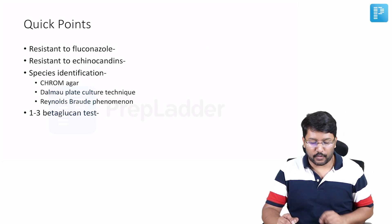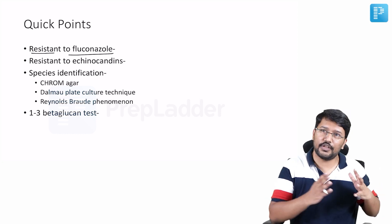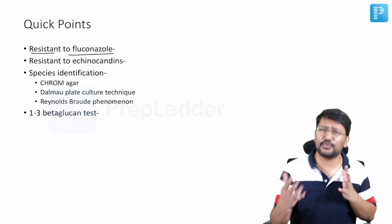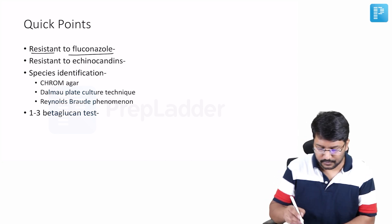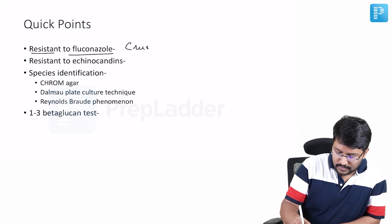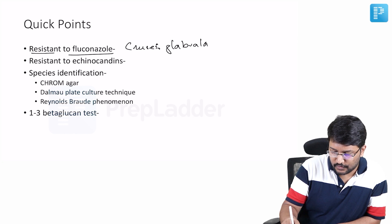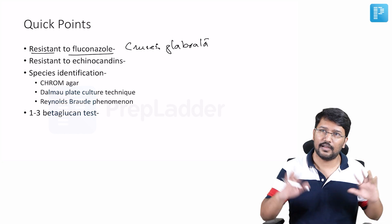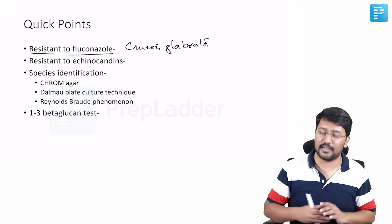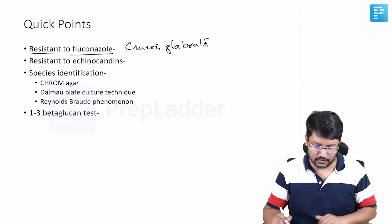Now, adding some additional important points, those Candida which are usually resistant to fluconazole. Usually, you know that the albicans is usually sensitive to fluconazole, but certain non-albicans are resistant to fluconazole. What are those? Crusei and glabrata. So I want you to remember these two species. Crusei and glabrata are usually resistant to fluconazole to start with. Albicans may be sensitive even when there is candidemia, but these two to start with are usually resistant to fluconazole.